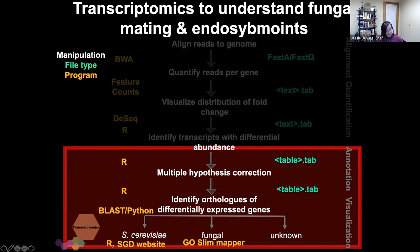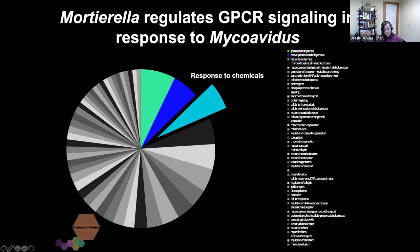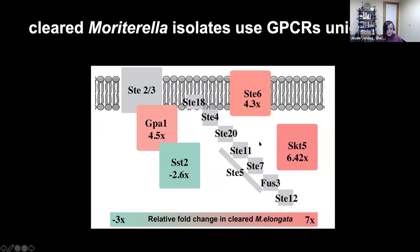This pie chart shows which genes are differentially expressed in the cleared isolates — a very simple experiment: endosymbiont present versus endosymbiont absent, what kinds of genes are changing in their abundance? The first two classes we see are lipid and carbohydrate metabolism, which is somewhat comforting given all previous work showing lipids and amino acids are very important. And then the third class — response to chemicals — ends up being genes that are involved in mating in Saccharomyces.